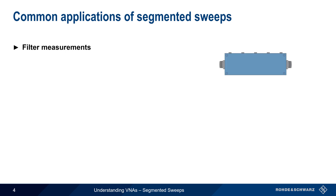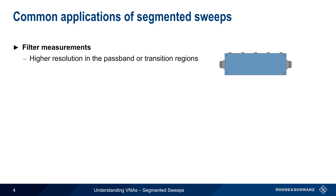Filter measurements are, in fact, one of the most common applications of segmented sweeps. A segmented sweep could be used to obtain higher resolution in a filter passband, for example when measuring passband ripple. A narrower IF bandwidth could be used in the stop bands for reducing noise, and thereby enable more accurate measurement of out-of-band rejection.